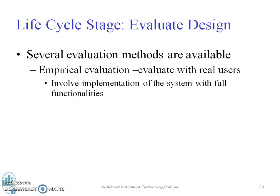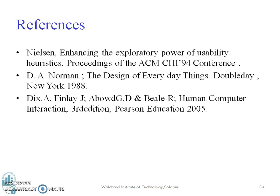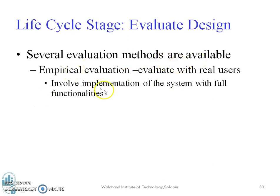The most important thing is that you need to have evaluation methods. Various evaluation methods are available. Empirical evaluation involves evaluating with real users and implementing the system with full functionalities. In general, the key difference between an interactive system design life cycle and software engineering is that users and clients get a chance to interact with the programmer, give their feedback, and there is scope for improvement at every stage — if it is not friendly, usable, or easy, changes can be suggested and incorporated.